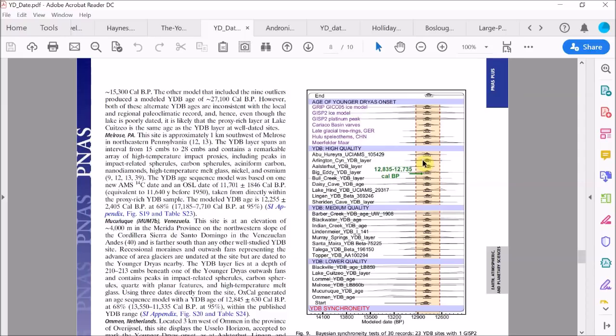Now in each case, the light gray distribution that you can see in the background is the modified age distribution for that site, so modified by the Bayesian statistical analysis, and the dark gray distribution is the age estimate of the Younger Dryas event.